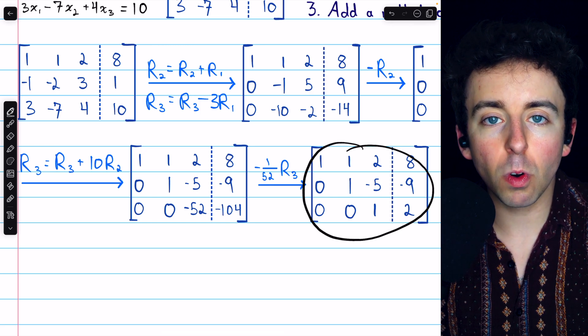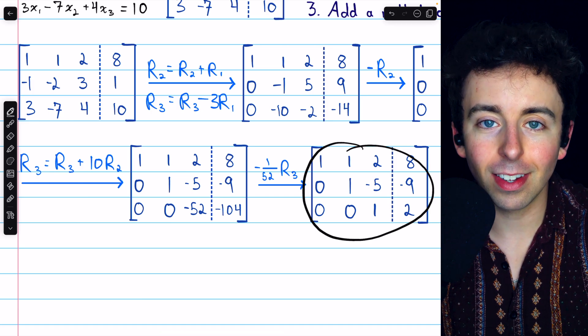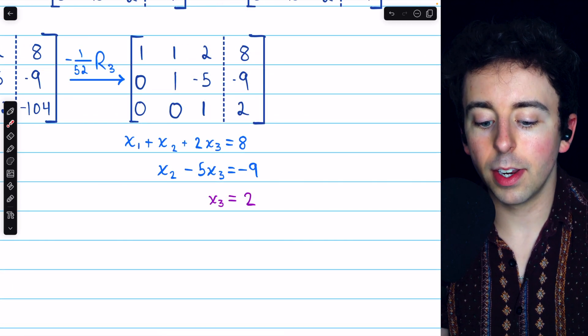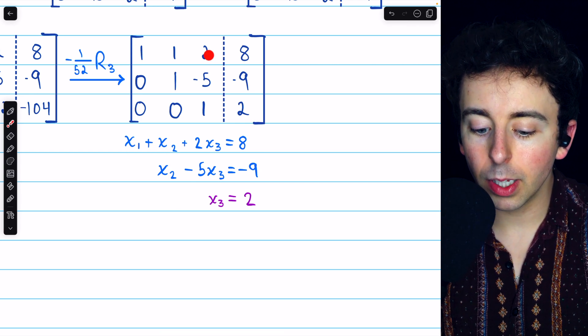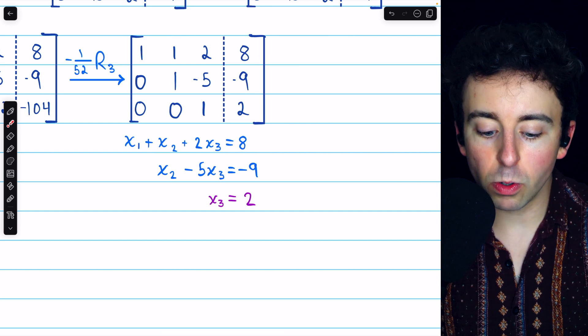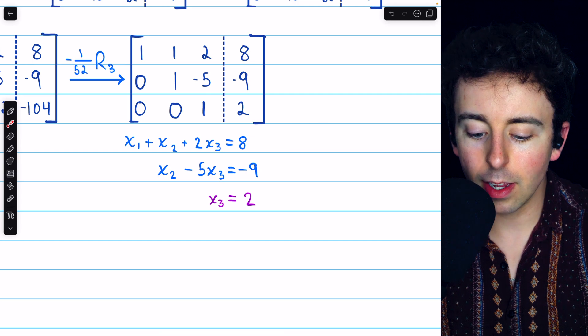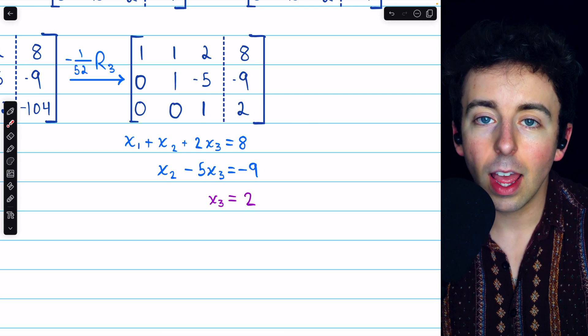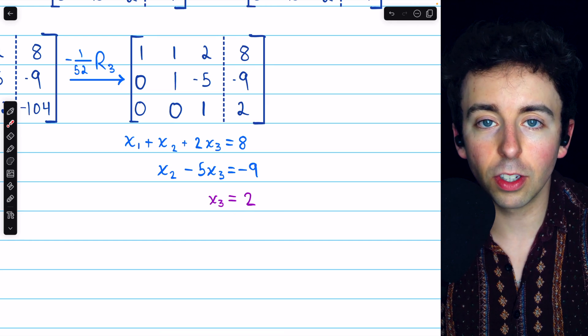And by converting the rows back into equations, we're going to be able to solve the system. And that looks like this. Row 1 tells us that x1 plus x2 plus 2x3 equals 8. Row 2 tells us that 1x2 minus 5x3 equals negative 9. And row 3 tells us plainly that x3 is equal to 2.